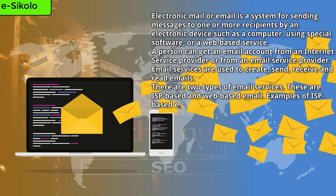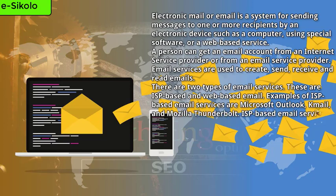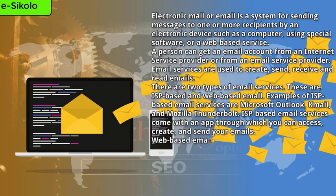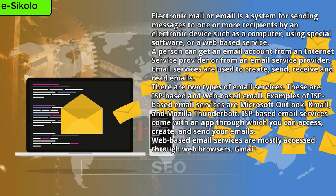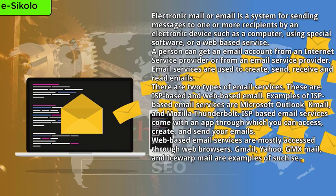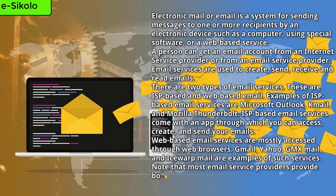Examples of ISP-based email services are Microsoft Outlook, KML, and Mozilla Thunderbird. ISP-based email services come with an app through which you can access, create, and send your emails. Web-based email services are mostly accessed through web browsers. Gmail, Yahoo, GMX Mail, and ISWAP Mail are examples of such services. Note that most email service providers provide both web-based and ISP-based email services.